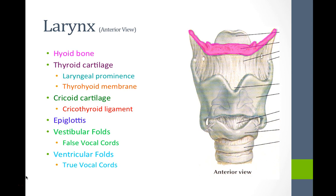The only thing attached to the hyoid here is a membrane called the thyrohyoid membrane, named because it attaches to the thyroid cartilage shown in purple. Your thyroid cartilage has many landmarks, but the only one you need to know is the one that sticks out anteriorly, called the laryngeal prominence — also known as your Adam's apple.